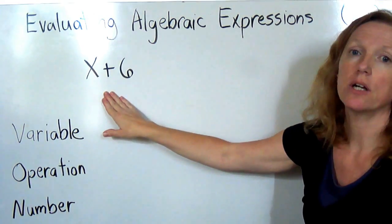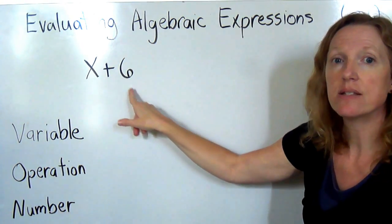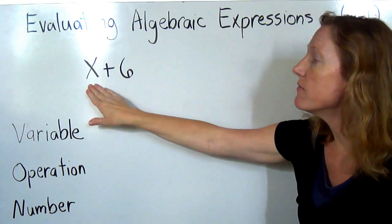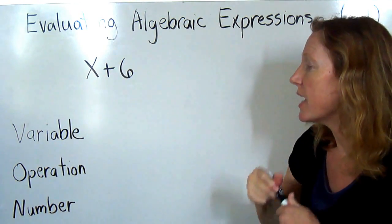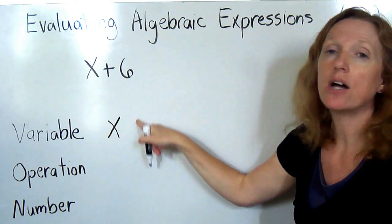Well, I have an example here of an algebraic expression, x plus 6. So you can see it has a variable. The variable is x. X can be different values. It could be 1, it could be 2, it could be 10, it could be 100. It could represent different numbers.